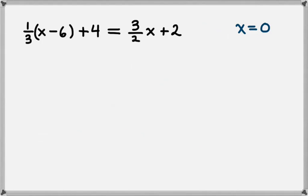Let's look at another one. Let's see if x equals 0 is a solution to this equation. Again, the first thing that we need to do is plug in 0 everywhere there's an x in the equation. So we'll have 1 third times 0 minus 6 plus 4 equals 3 halves times 0 plus 2.